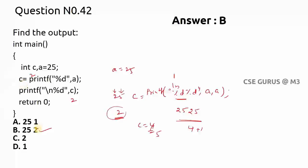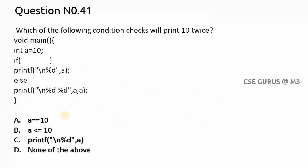Now coming to question number 41: which of the following condition checks will print 10 twice? We need to find which option causes the output 10 to be printed two times.